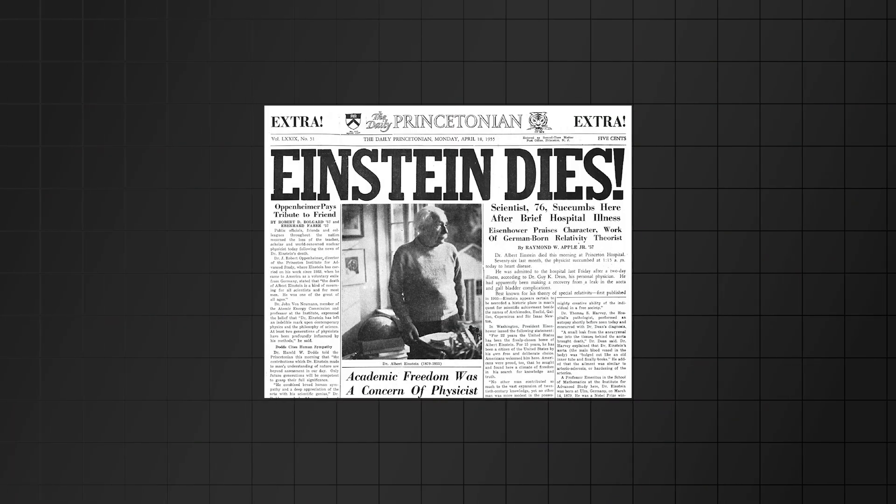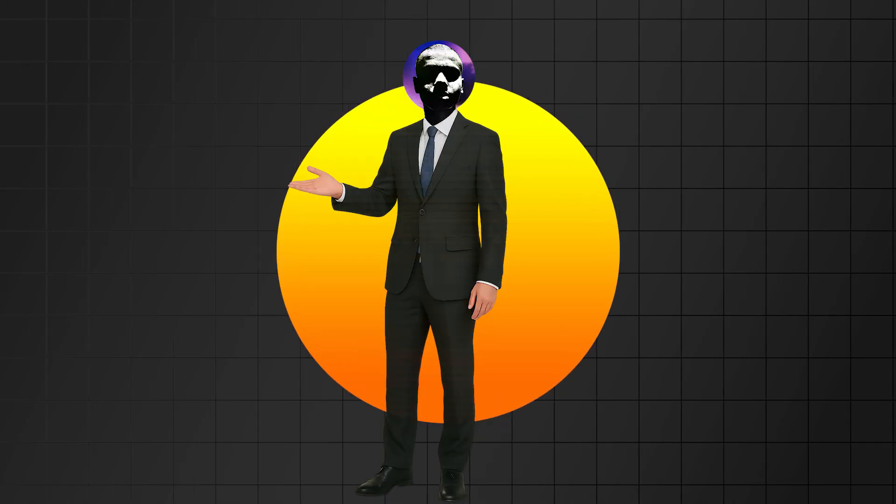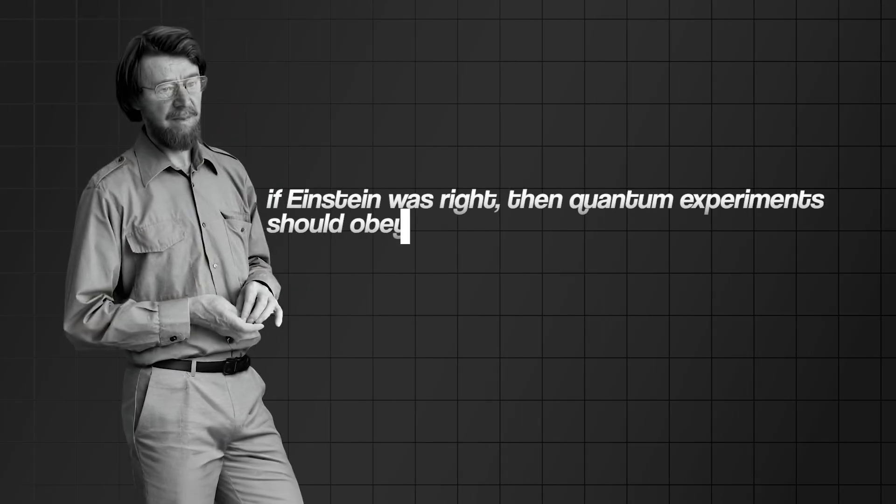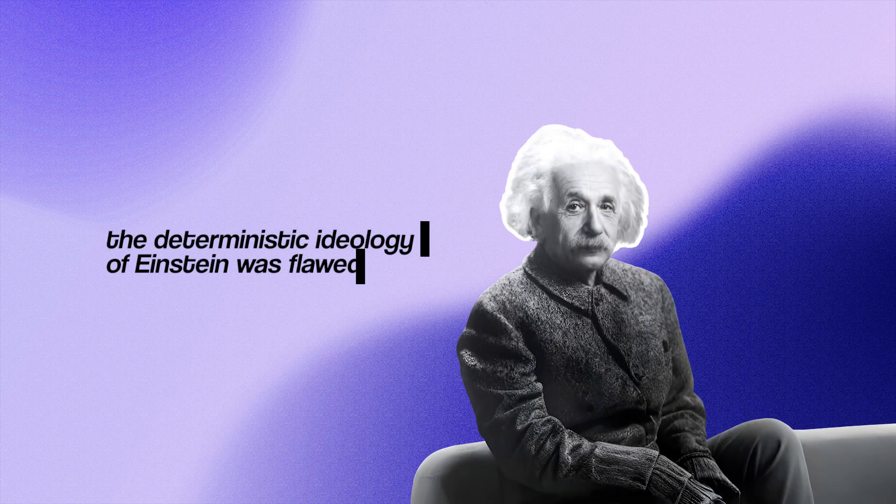But in 1964, almost a decade after Einstein's death, a physicist named John Bell would go on to rule out his hidden variables theory. Through experiment, Bell showed that if Einstein was right, then quantum experiments should obey certain limits. And they didn't. So finally, it became clear. The deterministic ideology of Einstein was flawed.